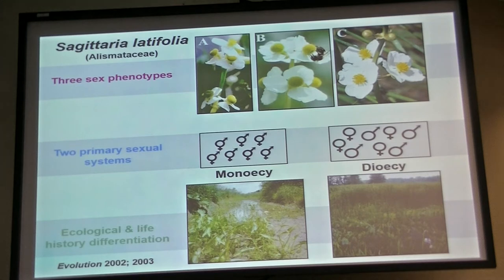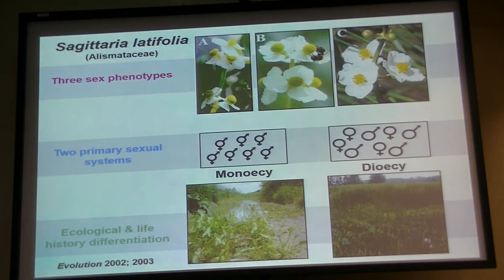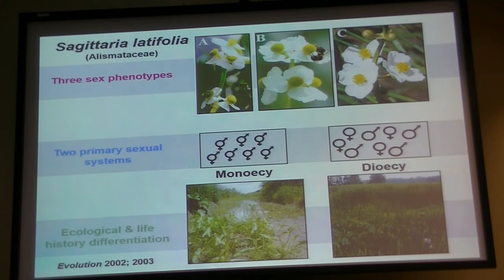I want to switch gears and talk about plant sex and gender. I'll introduce a completely different system involving a plant that is pretty common here in eastern North America — go to any freshwater lake and there's a reasonable chance you'll see arrowhead. Early work done in my lab by Marcel Dorkin, about ten years ago, found a really interesting pattern. In fact, I found the pattern initially — discovering that there were in fact two sexual systems in this species — and Marcel then did a really nice piece of work.